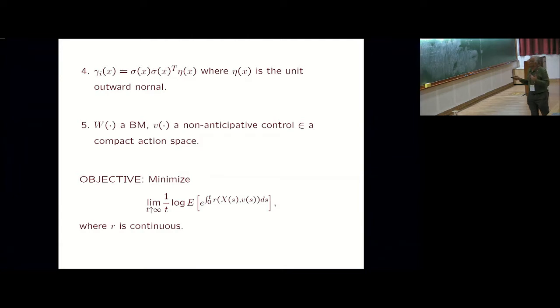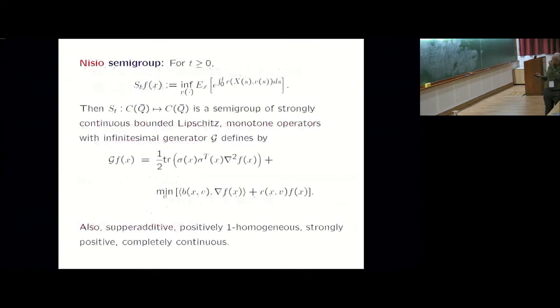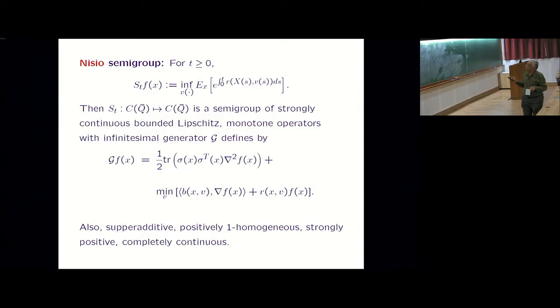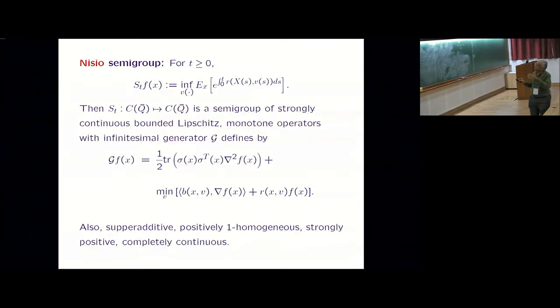This is confined to some nice bounded set. This is the direction of reflection and this is a Brownian motion. Control is non-anticipative in the sense that it's independent of the future increments of Brownian motion. Otherwise you cannot do stochastic calculus. And I'm looking at a minimization problem here. Nisio semigroup, again Nisio herself had cleaned it up long back. This is the operator and it satisfies semigroup property.